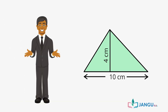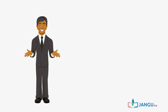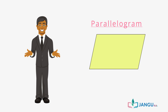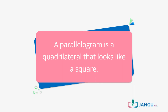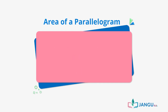And that's how easy it is to calculate the area of a triangle with known height and length. The next shape we'll be learning about is a parallelogram. As we have learned in our previous lessons on plane shapes, a parallelogram is a quadrilateral that looks like a square. The formula for calculating its area is B times H, where B is the base length and H is the height.